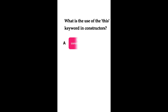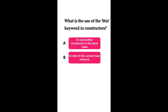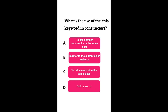Welcome to Java Quiz Series. Here is one more question: What is the use of the this keyword in constructors? Option A: to call another constructor in the same class. Option B: to refer to the current class instance. Option C: to call a method in the same class. Option D: both A and B. You have five seconds to answer.